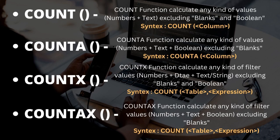COUNTX counts the number of cells in a particular column but excludes blank and boolean values. COUNTAX also counts the number of cells in a column, but it takes into consideration numbers, text, and boolean values, while also excluding blank values. These are the main differences between COUNT, COUNTA, COUNTX, and COUNTAX DAX functions.